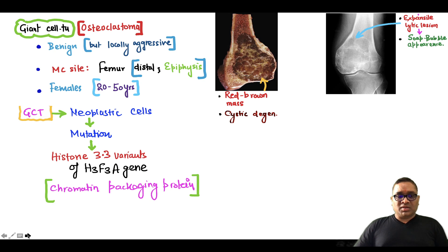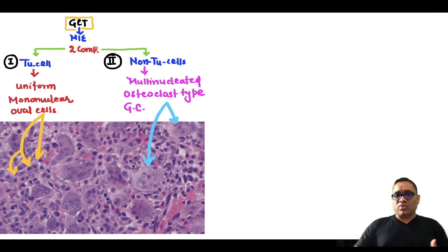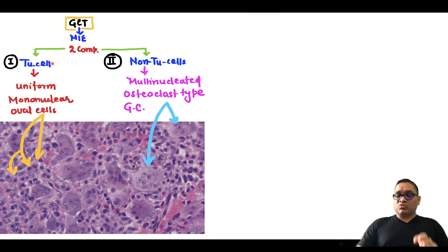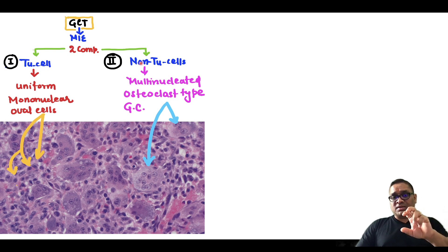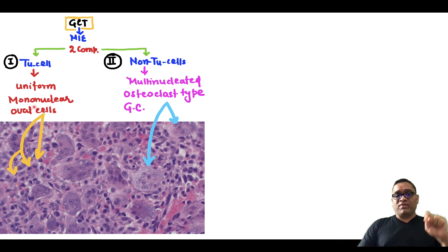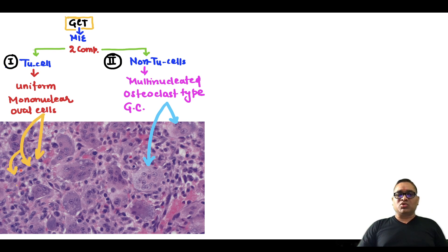On microscopic examination, these tumors will have two components: tumor cells and non-tumor cells. The tumor cells will be uniform mononuclear oval cells — the key feature is the uniform mononuclear cell with only one nucleus, as you can see here.